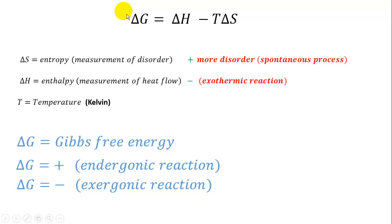A lot of times if a reaction is going to go to products, one thing we learned is that the equilibrium constant — if it is an equilibrium reaction — is going to be very large, so K will have a large number. But what about the thermodynamic parameters in terms of energy that determine whether a reaction will go to products? This is the equation that tells us this.